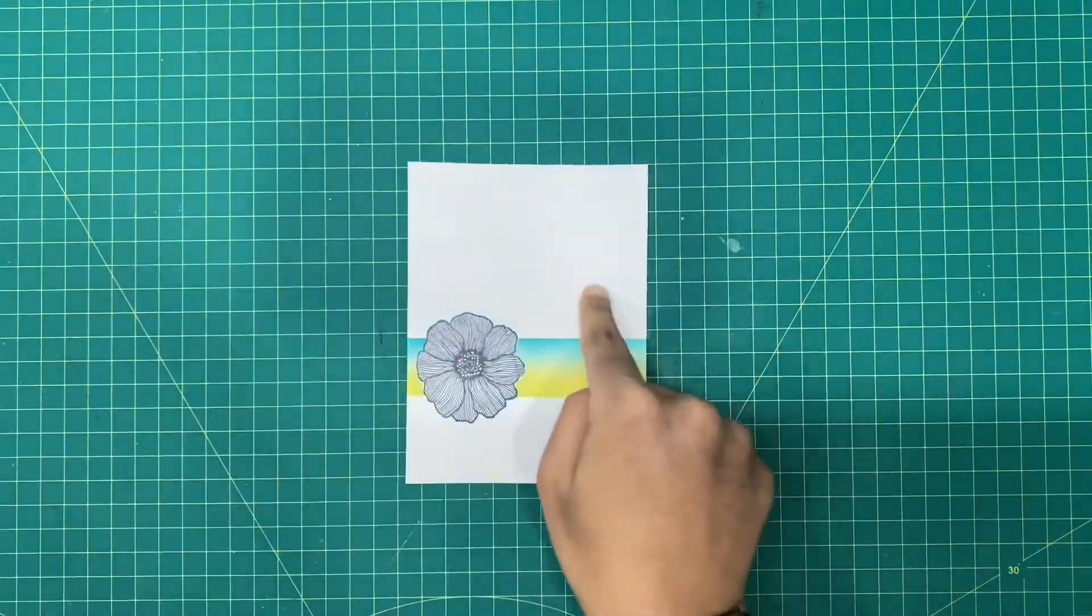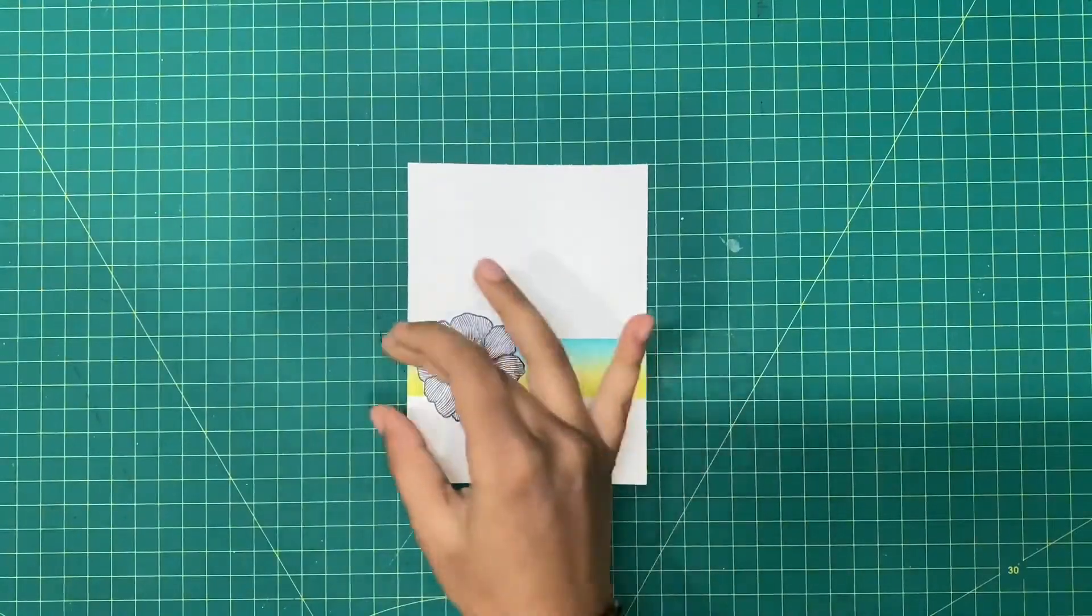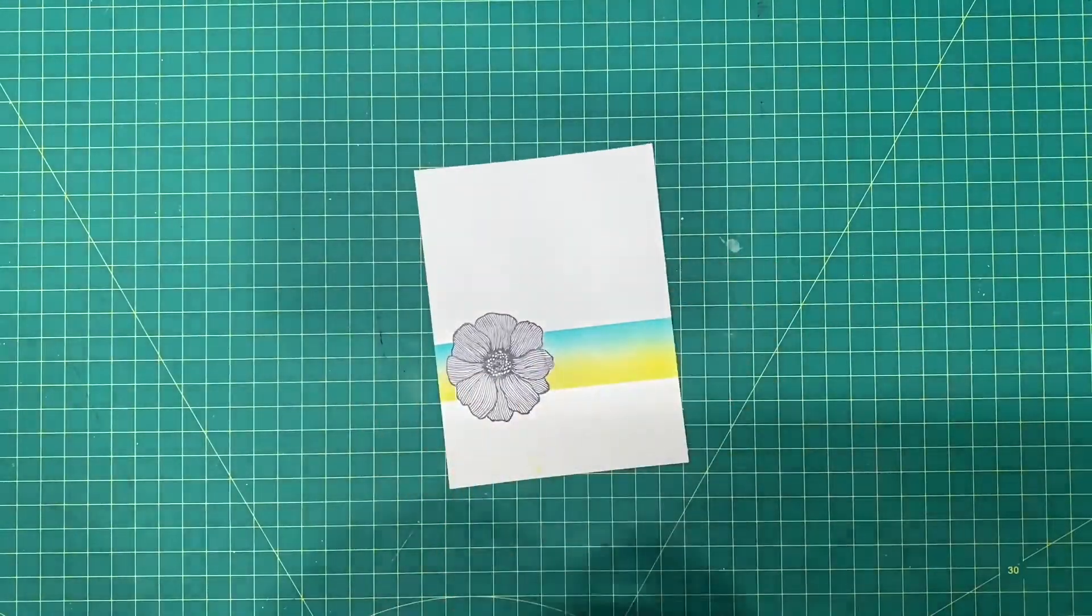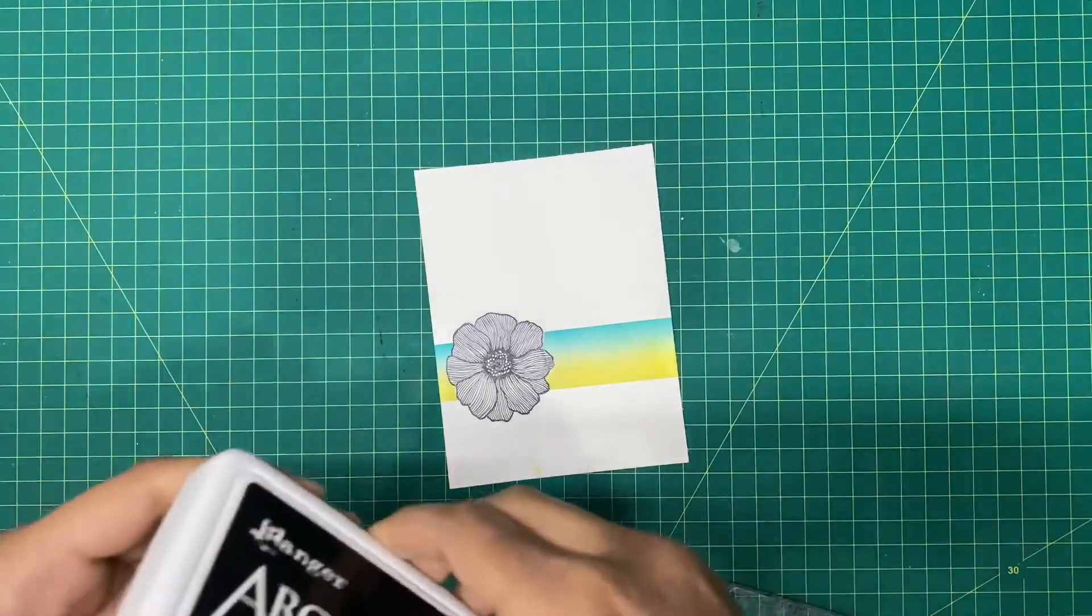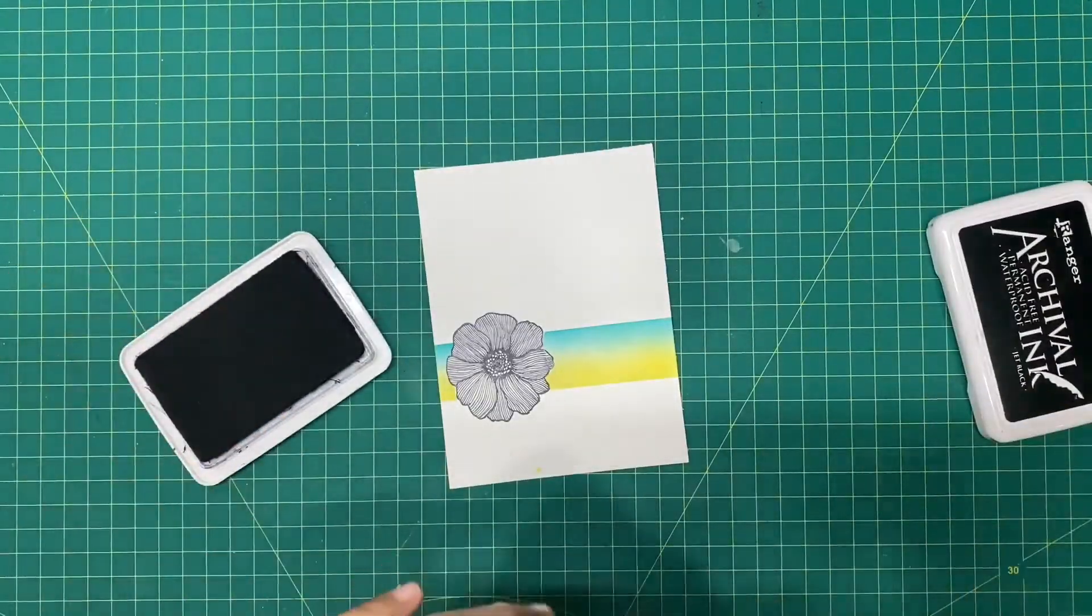I'm going to stamp it over here on top of our dye ink. I'm going to take my black ink pad and stamp it.